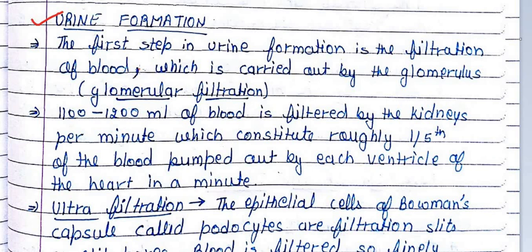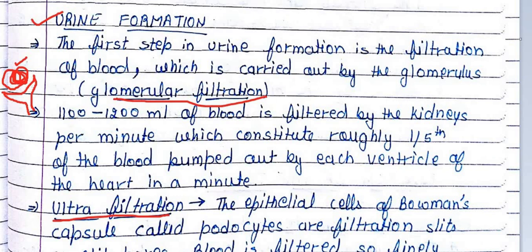For urine formation we have two main steps: glomerular filtration and ultrafiltration. Glomerular filtration occurs at the glomerulus, which is the main filtration unit. Blood vessels bring blood, waste products are released into the space of the Bowman's capsule — this is glomerular filtration. The filtered material then enters the Bowman's capsule — this process is called ultrafiltration.